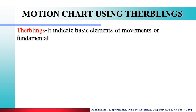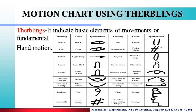Next is the Therblig. Therblig क्या होता है? It indicates the basic element of motion or fundamental hand motion. मतलब Therblig जो indicate करता है, hand motion को indicate करता है. तो यहाँ पर different Therblig symbols हैं, जैसे Search के लिए black color होता है और इसके लिए symbol होंगा.